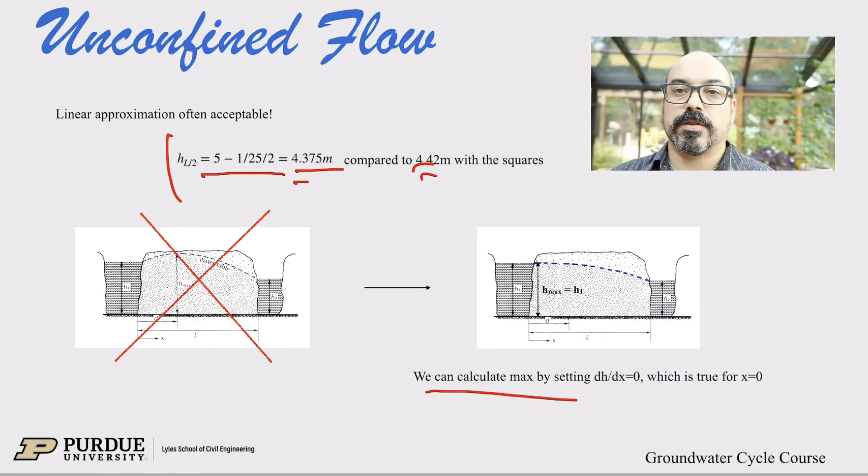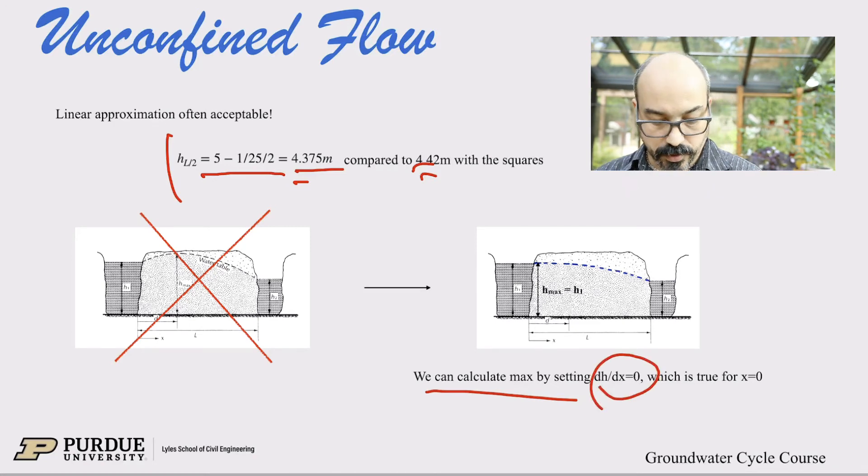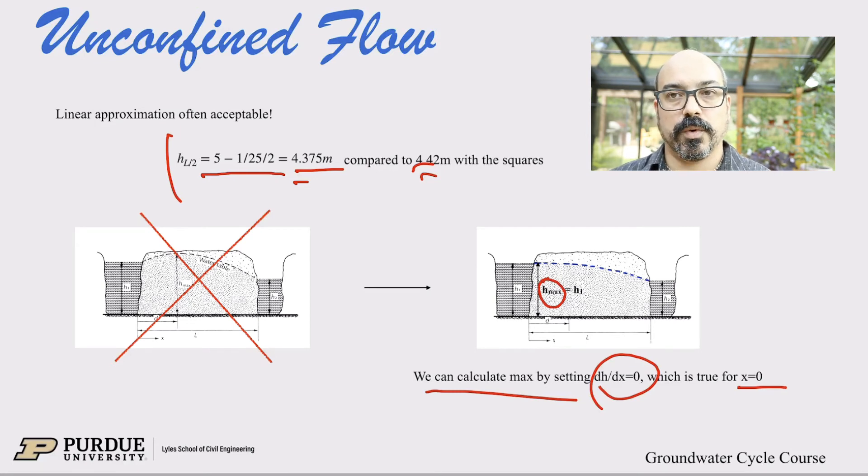So depending on the cases, it may or may not be important, but I'm just saying that oftentimes we actually use the linear approximation instead of the parabolic profile. Oh yeah. H max, excuse me. What is the maximum head? So we can calculate the maximum head by setting the dh/dx equals zero, which is true here for X equals zero. So notice that H max here, and sorry, this is an aside because this will change in the next lecture when we look at recharge. So when there's rain or when there is recharge, when there is input of rain on the way, then things are different.